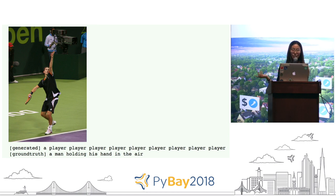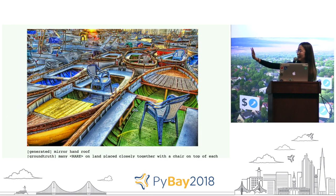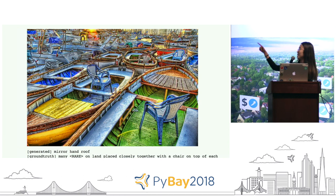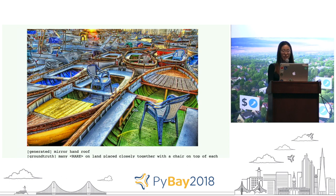We need to find some way to fix this. It also output some really unrelated vocabulary — for some image of a boat, the generated caption was 'mirror hand roof,' which is completely irrelevant. Maybe it looks a little bit like a rooftop.